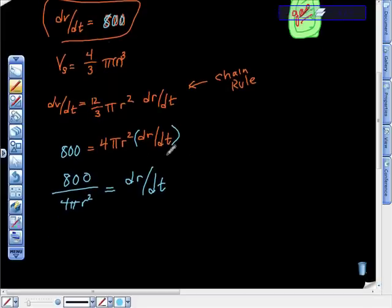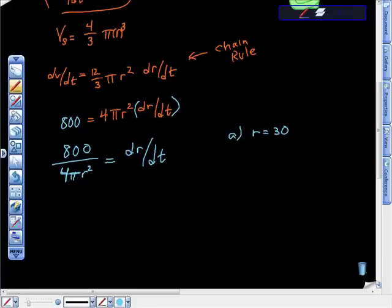Here's our rate of change right here. Then all I'm going to do is, we're asked when the radius equals 30, so I'm just going to take radius equals 30 and plug that in. I'm going to get 800 over 4π times 30².